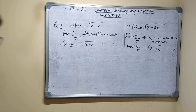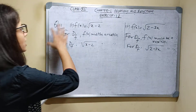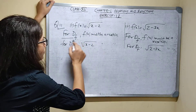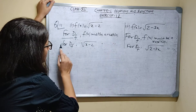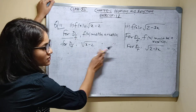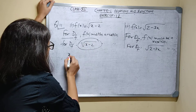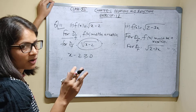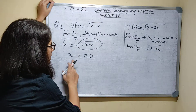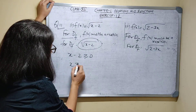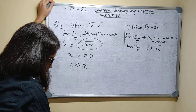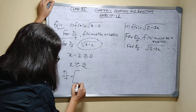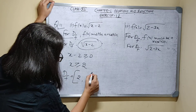Question 11, first part: you have to find the domain of the following real functions. Function f(x) is given as root of x minus 2. For domain of a function, f(x) must be a real number. It means root of x minus 2 must be a real number. When will it be a real number? When x minus 2 is greater than or equal to 0, because it is under a root. So x is greater than or equal to 2. So domain of the function will be [2, infinity).